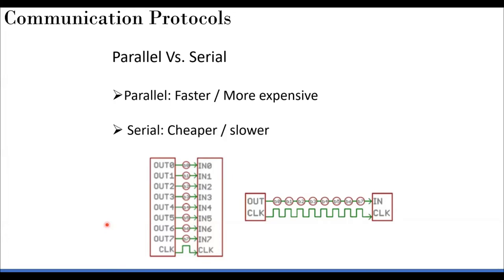From a speed perspective, parallel is very good, but consider the complexity: we need eight wires for 8-bit transmission, and 16 wires for 16-bit. The number of pins on an IC or system-on-chip is pretty limited. Even our Freedom board microprocessor has many multiplexed pins because there aren't enough dedicated pins, so parallel protocol becomes impractical.